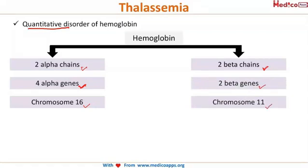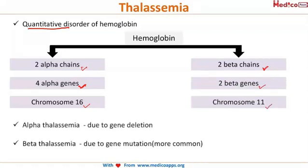Alpha thalassemia is caused due to gene deletion, whereas beta thalassemia is caused due to gene mutation. Beta thalassemia is more common than alpha thalassemia.